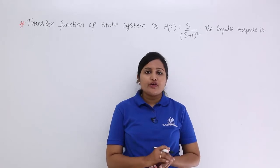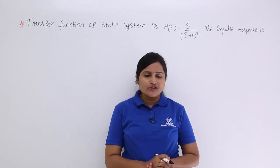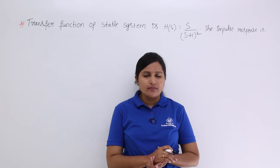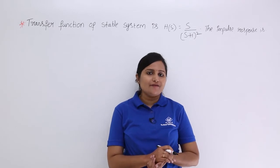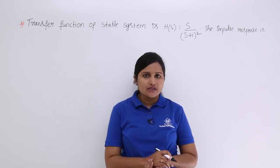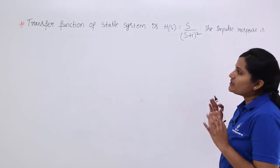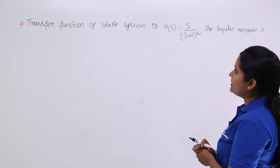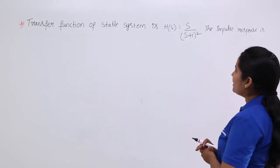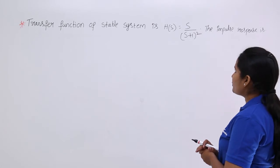In this video we are going to derive impulse response from the transfer function of the system by using the inverse Laplace transform concept. The transfer function of the stable system is H(s) = s / (s+1)².